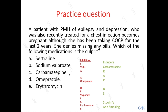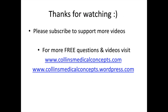Carbamazepine, which is an inducer, induced the liver to produce more P450 enzymes that used up the combined oral contraceptive pill a lot faster than it should, and hence the pregnancy. Thanks for watching. If you liked the video, please subscribe to support more videos. There are more free questions related to this video and many others on the website. Good luck!